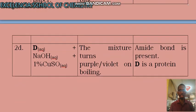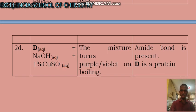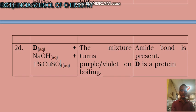Because D, they said if you add sodium hydroxide solution plus one percent copper two sulfate, one percent copper two sulfate. And you know that this is biuret test, of course. Plus boiling. Plus boiling.